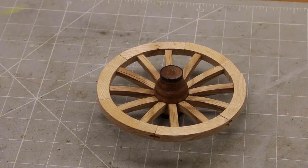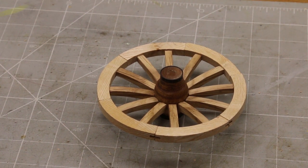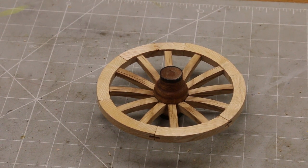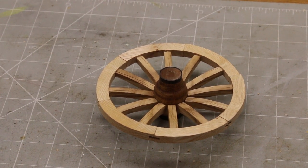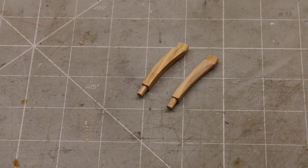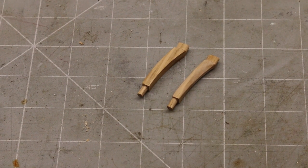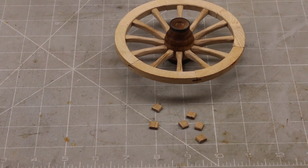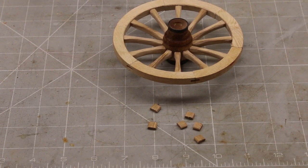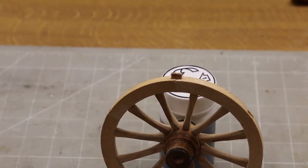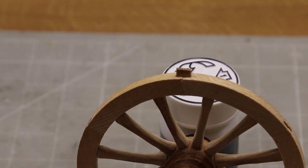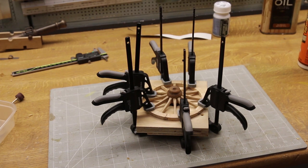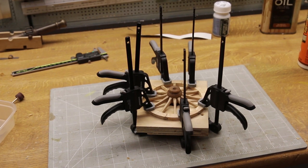After whittling the tenons on the spokes to fit the mortises this is the first fit. There will be some adjustment required but I want to shape the spokes first. A bit of whittling and sanding turns the square spoke on the left into a shaped one. The wheel is now ready for the small tenons to be fitted into the rim. I shall be gluing these in. The only place on the wheel where there will be any glue. I want the rest to be able to move. With the tenons glued the wheel is clamped flat to set.